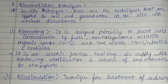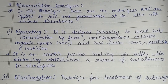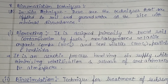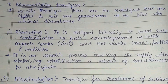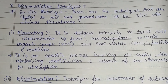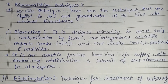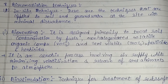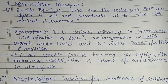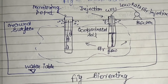The first type is bioventing, which is a type of in-situ technique. It is designed primarily to treat soil contamination caused by fuels, non-halogenated volatile organic compounds (VOCs) — which do not contain halogens like fluorine or chlorine — semi-volatile organic compounds (SVOCs), pesticides, and herbicides. It is an aerobic process involving air supply (oxygen) while minimizing the volatilization and release of contaminants to the atmosphere.